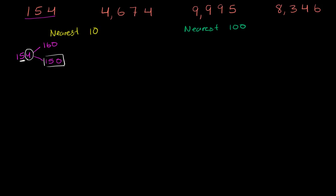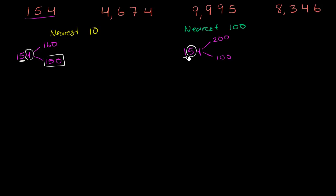Now let's think about that same number rounding to the nearest 100. So 154 to the nearest 100 — if we were to round up, the multiple of 100 above 154 is 200. The multiple of 100 below 154 is 100. We look one place to the right of the hundreds place, which is the tens place. If that place is five or greater, we round up; if it's less than five, we round down. The tens digit is five, so we round up to 200. Interesting — rounding to the nearest 10 gave us 150, but rounding to the nearest 100 gives us 200.